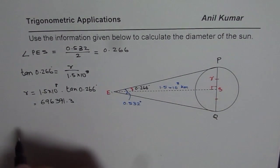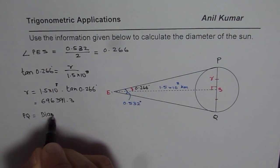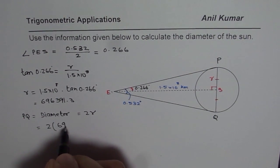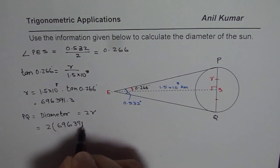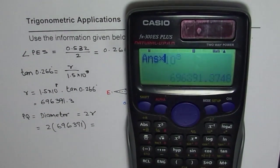And we are interested in diameter. So PQ is the diameter. Diameter will be twice the radius, so it will be 2 times 696391. Let's multiply this. So I'm just multiplying this number by 2.